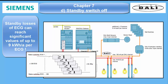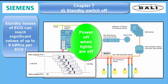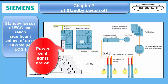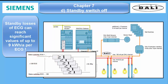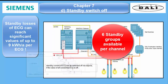The function is actually a logic OR gate which evaluates all ECGs of a standby group. Its output can be used to control a channel of a suitable switching actuator to turn off the supply circuit of these ECGs. As soon as at least one ECG of a standby group is turned on again, the corresponding actuator will turn on immediately. There are 6 standby groups available per each DALI channel.